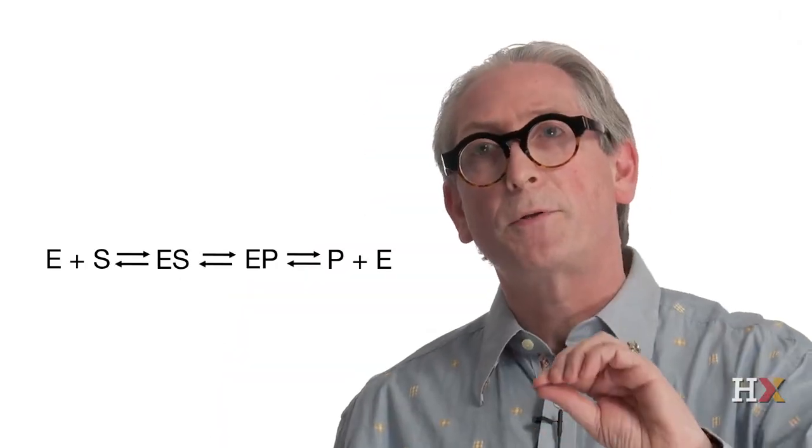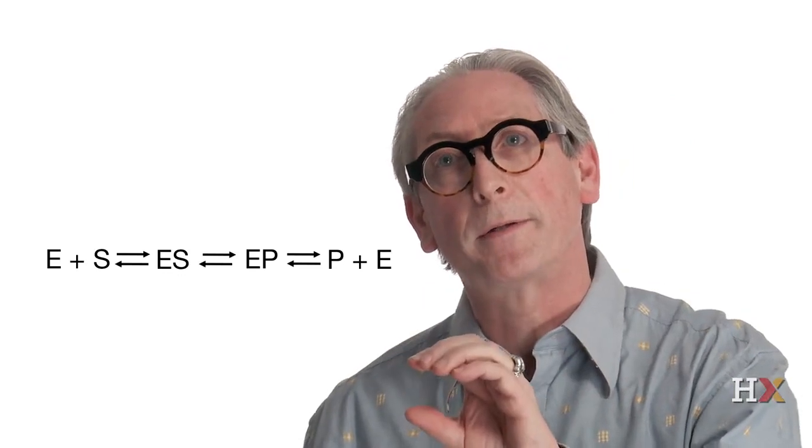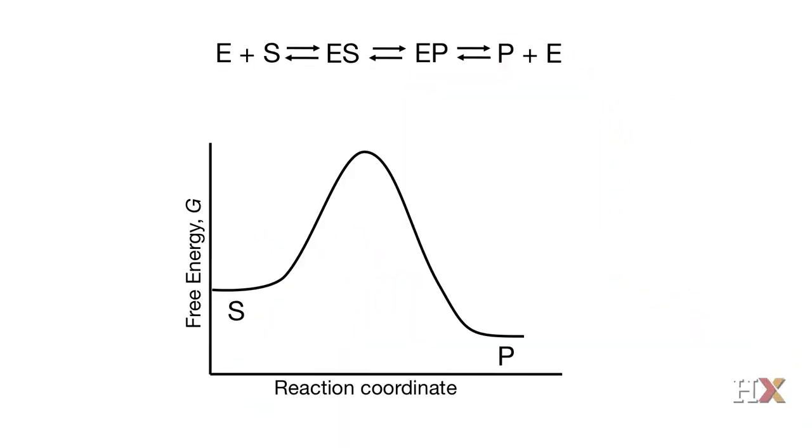What an enzyme does, it first reacts with a substrate to form an enzyme-substrate complex. Then the substrate is converted into a product and you have formation of an enzyme-product complex. And finally the product is released. You have formation of an enzyme-substrate complex and an enzyme-product complex, as well as other intermediates of the reaction—for example, the transition state.